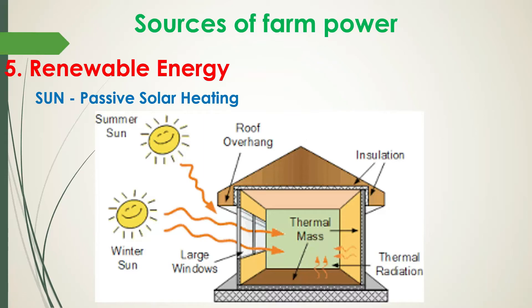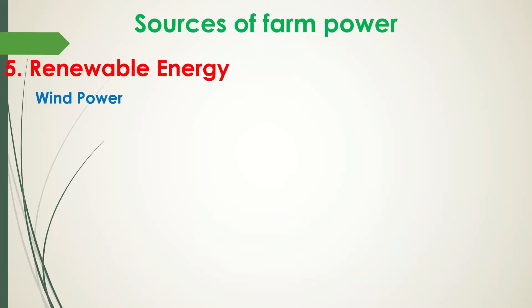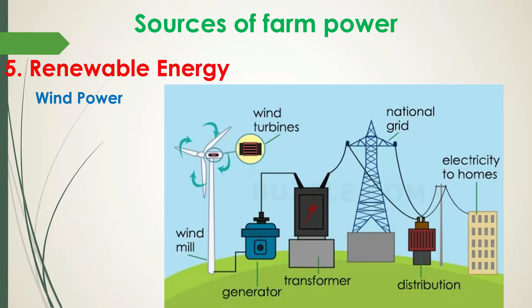Another renewable energy source is wind, defined as moving air. Wind energy is harnessed to generate electricity, to pump water, and to power sawmills. Wind is harnessed with the use of wind turbines — the wind hits the blades of the turbine causing it to spin, which rotates the shaft of the electric generator to generate electricity.